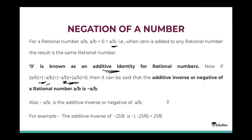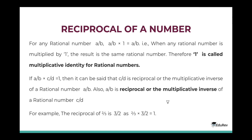Let's move to the next concept: reciprocal of a rational number. For any rational number a/b, a/b multiplied by 1 equals a/b. That is, when any rational number is multiplied by 1, the result is the same rational number. Therefore, 1 is called the multiplicative identity for rational numbers. 0 was the additive identity, whereas 1 is the multiplicative identity for rational numbers.